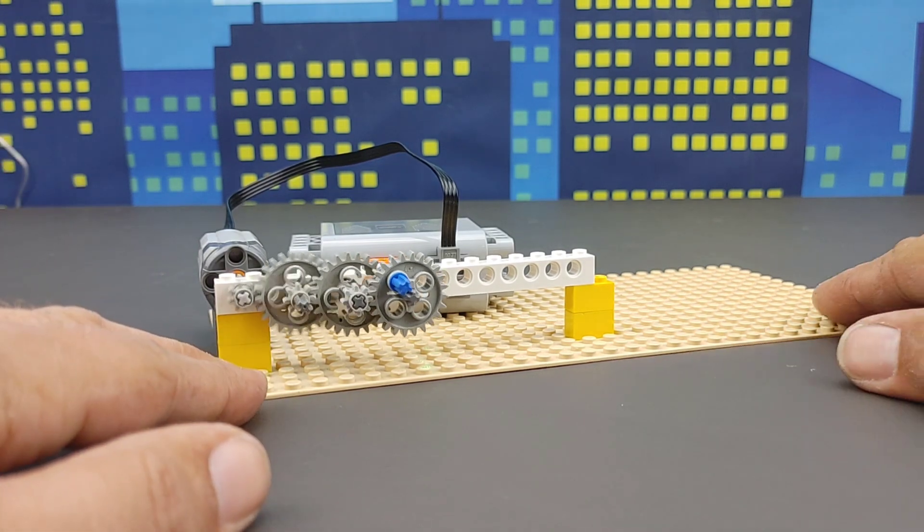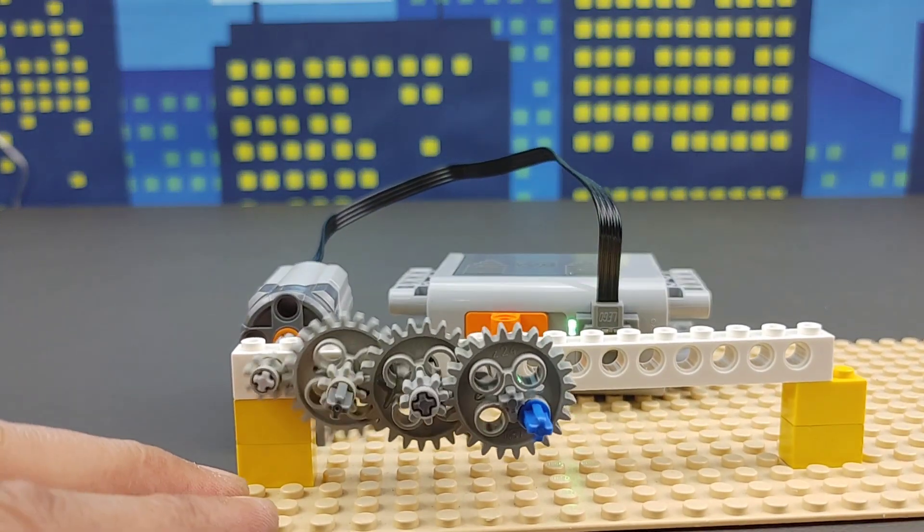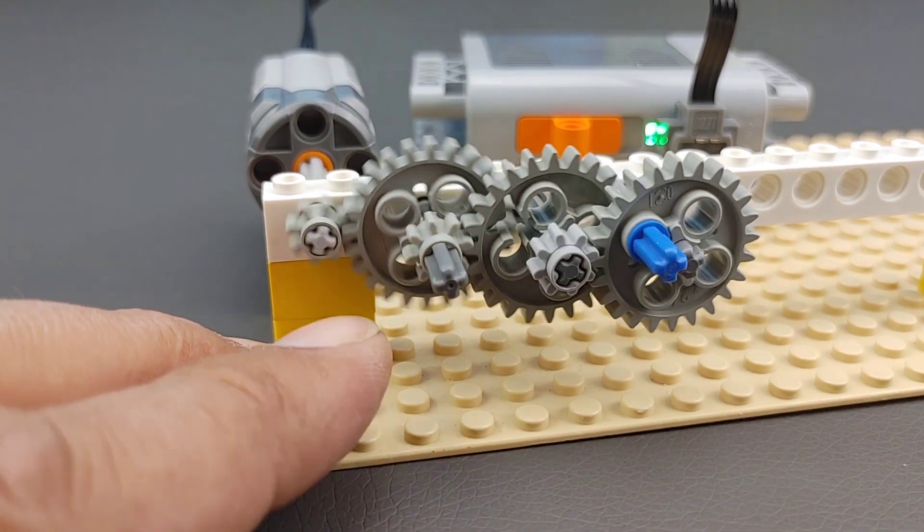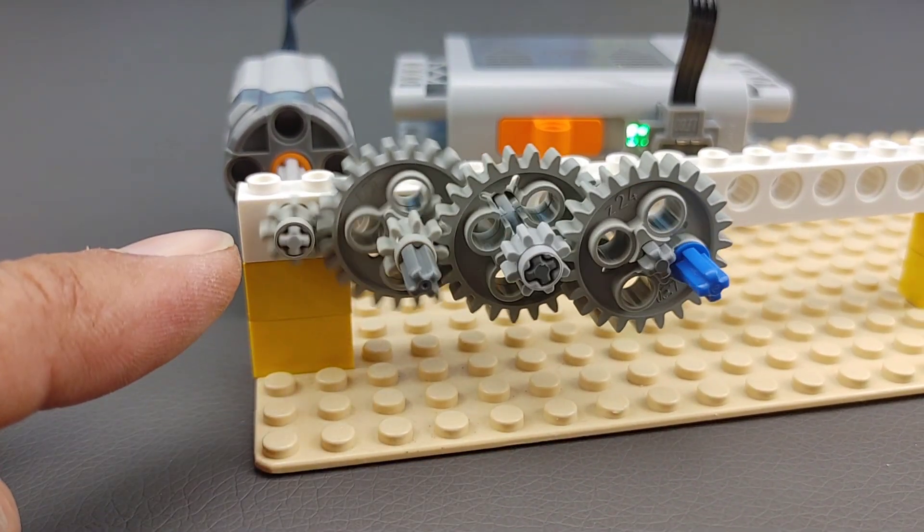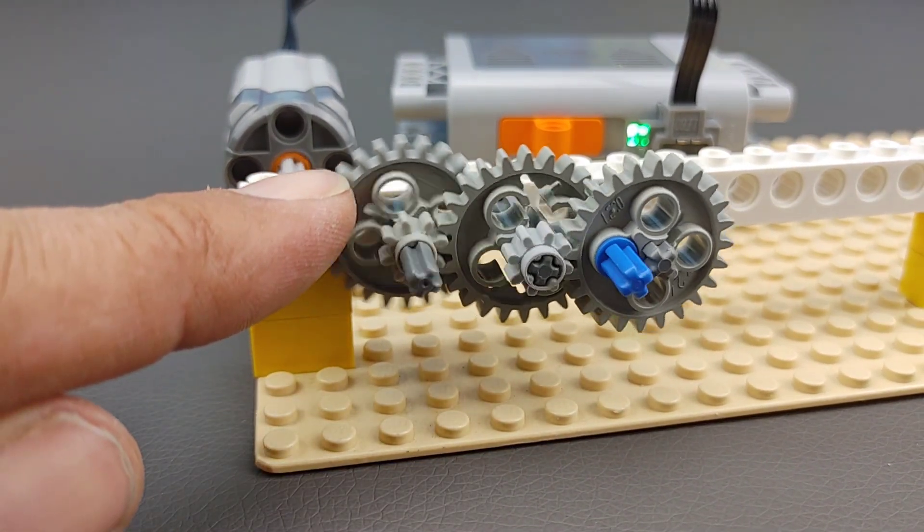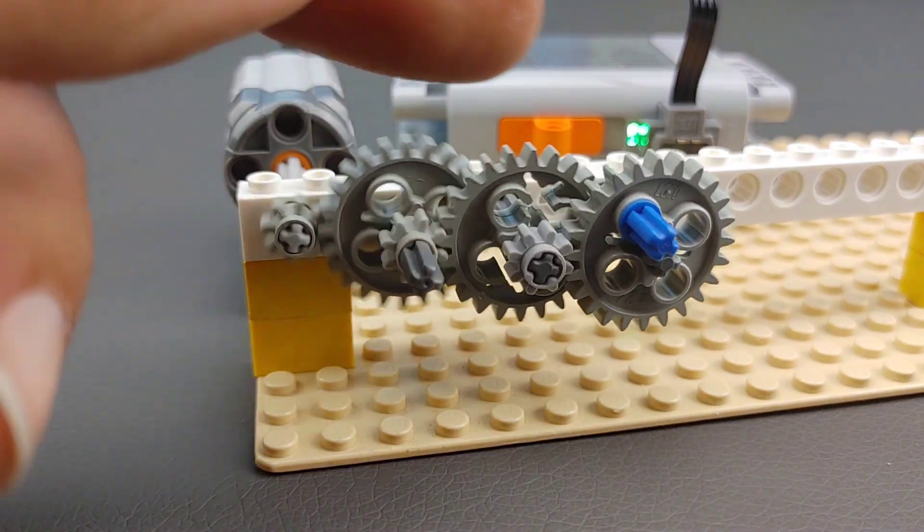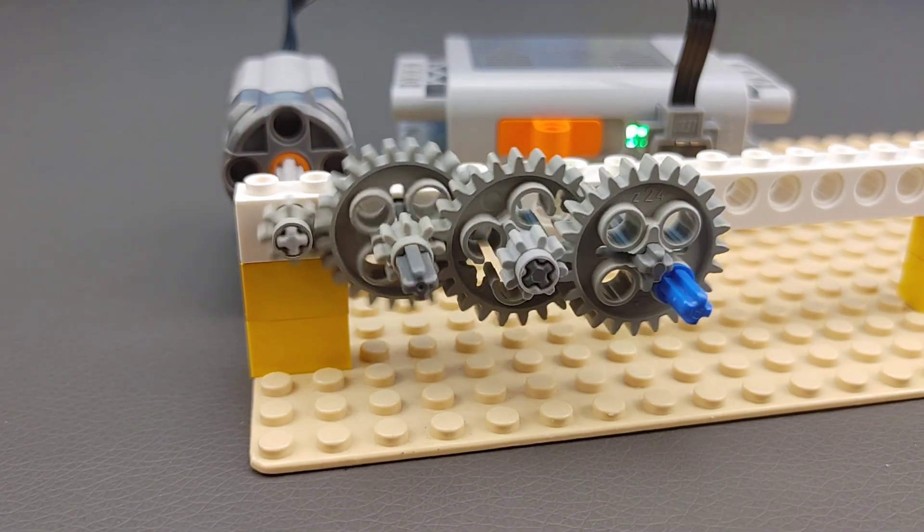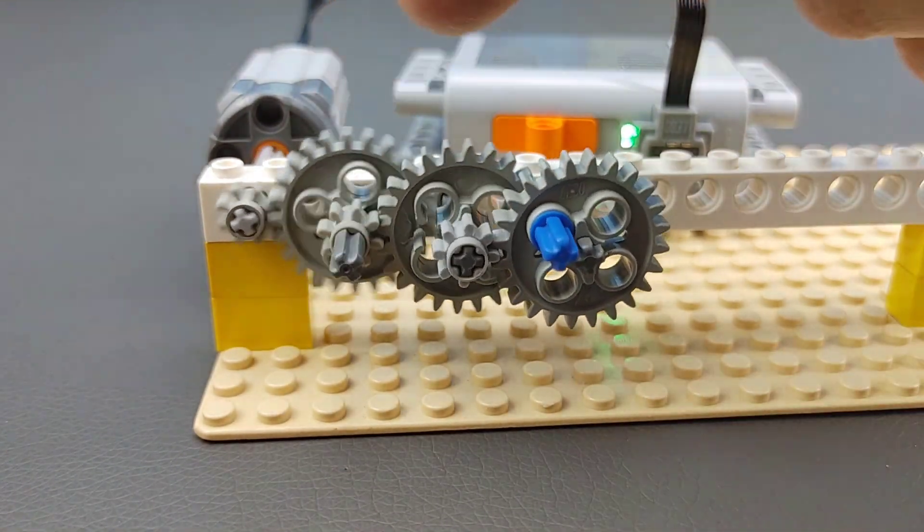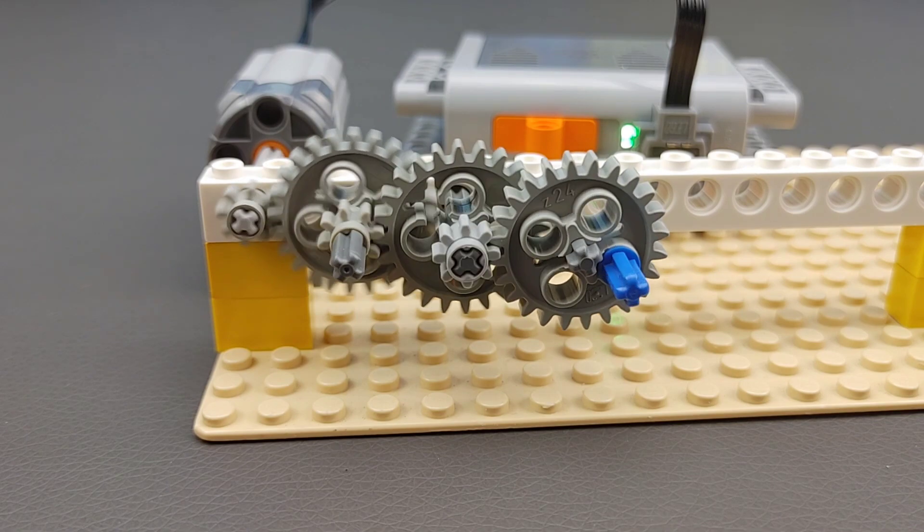So now, as you can see, and I'm trying to get this as close as possible for you, our first gear is 8 teeth, and then we go to a 24, to an 8, to a 24, to an 8, to a 24. And every time we do that, we are changing the speed. So each gear is now rotating at a different velocity.